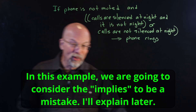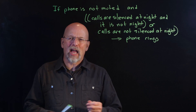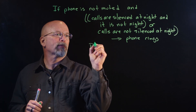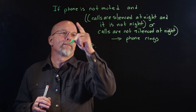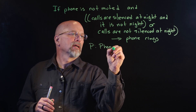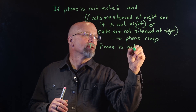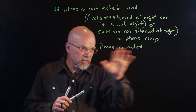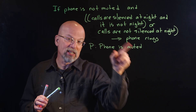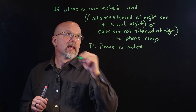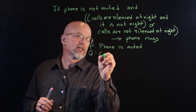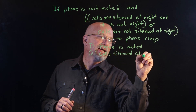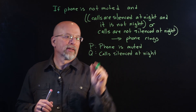It turns out that this is really a compound statement. Let's go ahead and come up with our atomic propositions. First of all, P: phone is muted. I realize I said up here that the phone is not muted, but the phone is muted as the base proposition — phone is not muted is actually the negation of P. And then Q is: calls silenced at night.